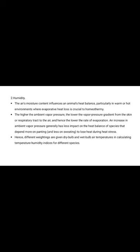The second factor is humidity. The air moisture content influences an animal's heat balance, particularly in warm or hot environments where evaporative heat loss is crucial to homeothermy. The higher the ambient vapor pressure, the lower the vapor pressure gradient from the skin or respiratory tract to the air, and hence the lower the rate of evaporative heat loss. An increase in ambient vapor pressure generally has less impact on the heat balance of species that depend more on panting and less on sweating to lose heat during heat stress, hence different weightings are given to dry bulb and ambient vapor temperatures when calculating temperature-humidity indices for different species.